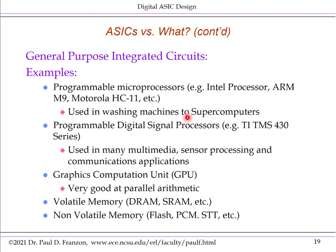Another class of general-purpose IC are programmable DSP engines, or digital signal processors, such as the TI TMS 430 series. These are suited for signal processing tasks such as multimedia applications, sensor processing, and sometimes communications.